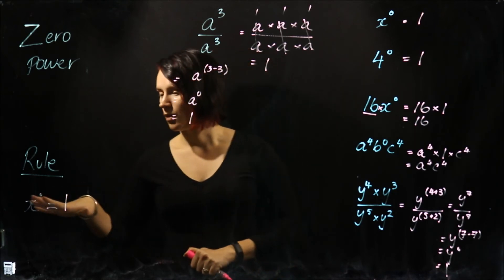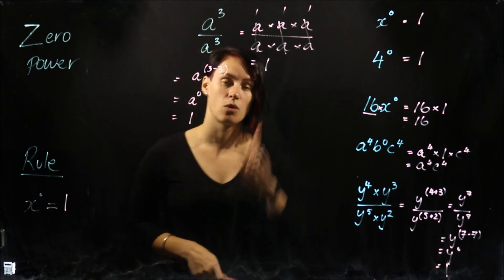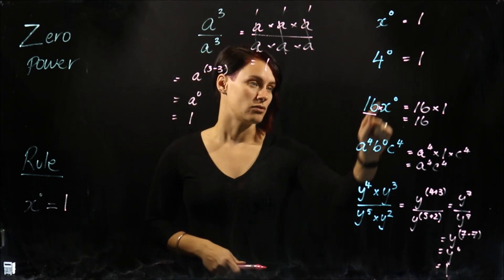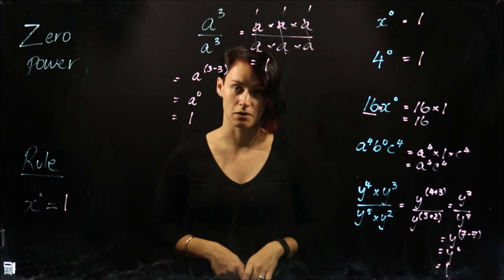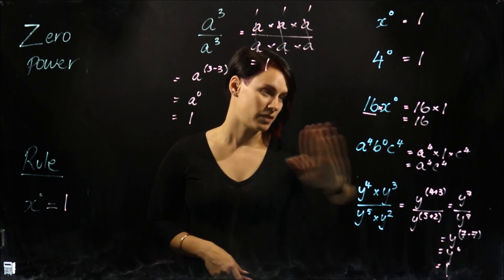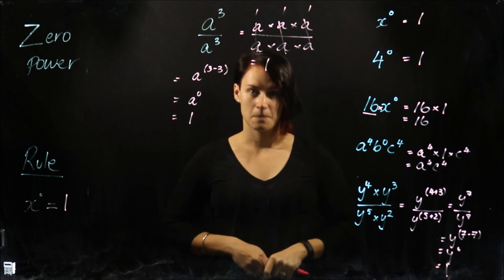So it doesn't matter what the base is when zero is the power, it equals one. But we have to be careful to consider that there are other numbers or other variables at play as well. So we don't just get to say this whole thing equals one because there are other variables that do not have zero as the power.